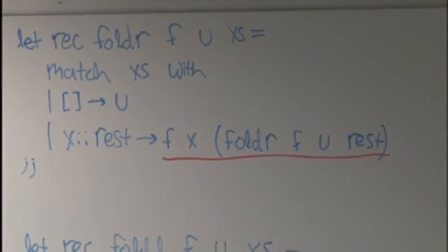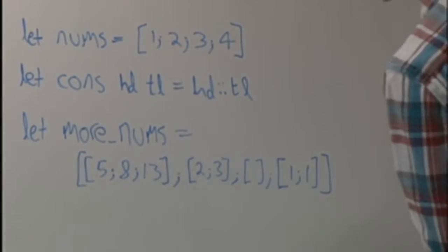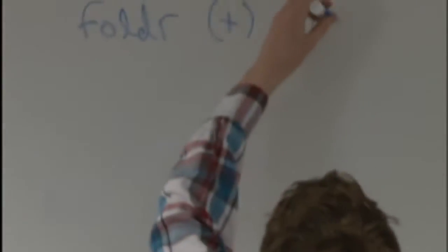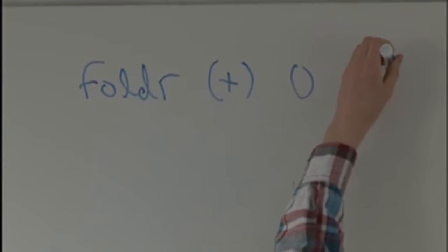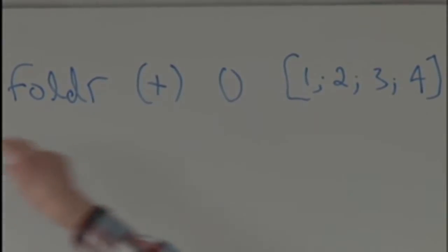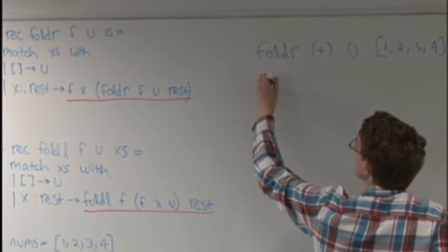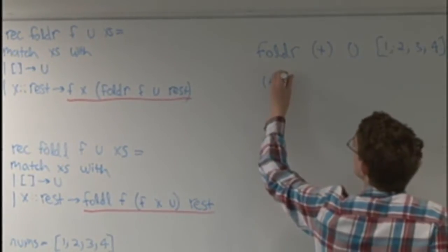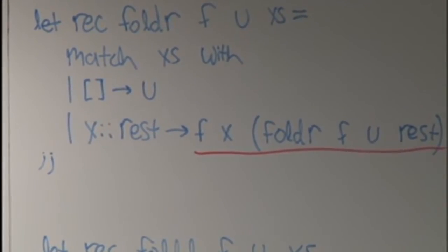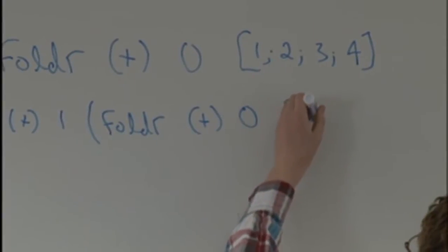We're going to look at fold right and fold left on nums using the plus operator. Starting with fold right of plus, zero as the base case, and nums which is one, two, three, four. We match on the list, do the split, and we get f of x — f being plus here. So we get plus of x, which is the head, one, and then fold right of f (still plus), u (still zero), and the rest of the list: two, three, four.